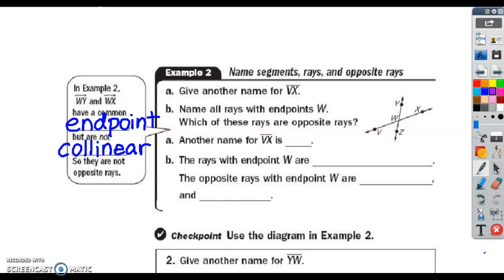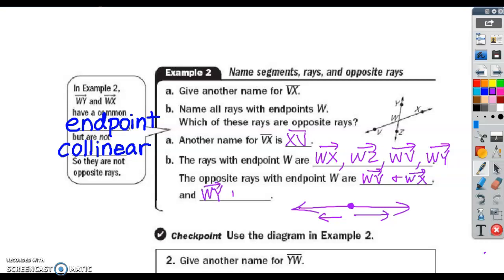Give another name for XV: VX. Rays with endpoint W. Notice how W doesn't have a dot right there in the center. When you have an intersection of two lines, you can assume that's a point. Rays with endpoint W: we can say WX, WZ, WV, and WY. Opposite rays go in opposite directions but have the same endpoint. One goes this way, one goes this way. An example would be WV and WX. And then the other pair would be WY and WZ.